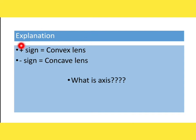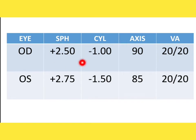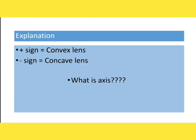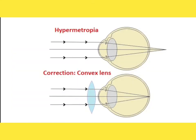A plus sign in the prescription indicates a convex lens, and a minus sign indicates a concave lens. The axis is only present in cylindrical lenses, not in spherical lenses.